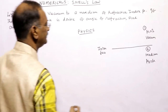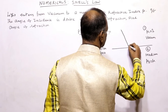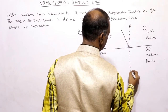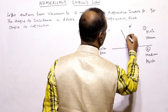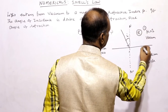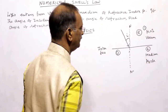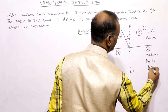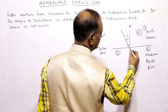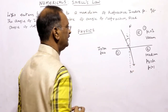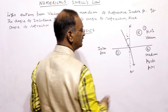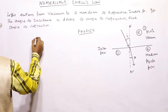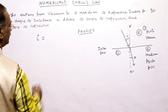Light is entering from the first medium. This is the normal. This is the angle of incidence. Since this is a rarer medium and this is a denser medium — vacuum has refractive index equal to 1, and the other medium has refractive index greater than 1 — after refraction, it will bend towards the normal because light enters from rarer to denser medium. This is the angle of refraction.